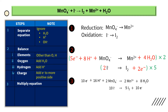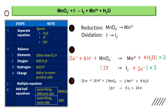The last step: add the half equations. The concept is: same thing on different sides — cancel (minus); same thing on the same side — add. We can see electrons on both equations. They are on different sides — one on the reactant side, one on the product side. So we cancel: 10 minus 10 equals zero. The electrons are fully cancelled out.